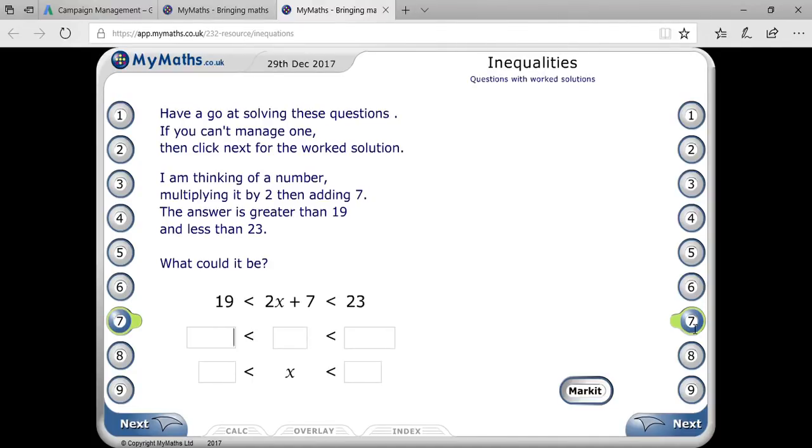Here again is a dual inequalities based question you are seeing on your screen. I am thinking of a number, multiplying it by 2, then adding 7. So that means firstly, let the number be X.